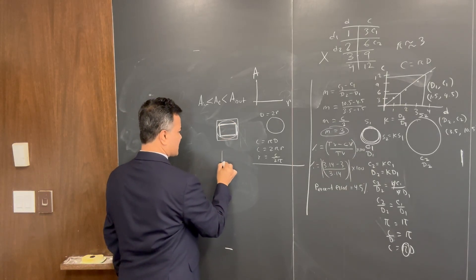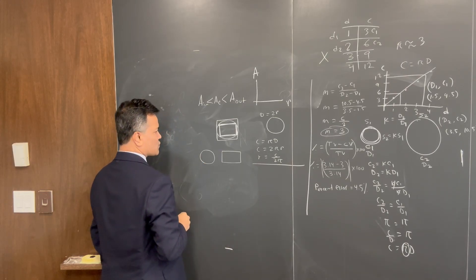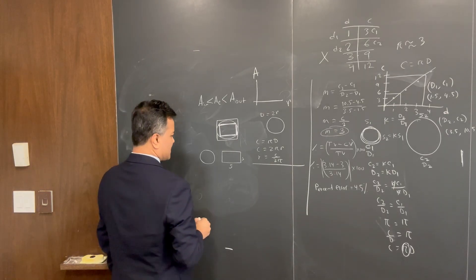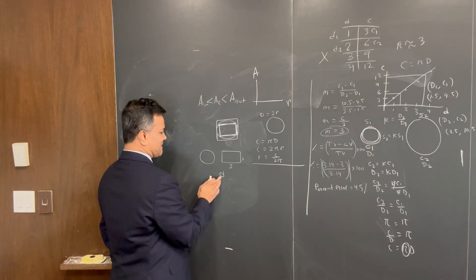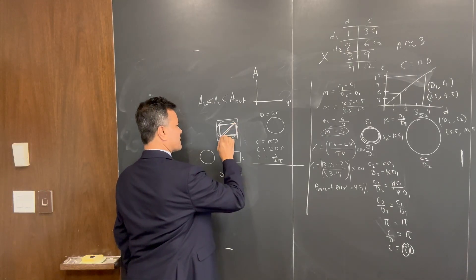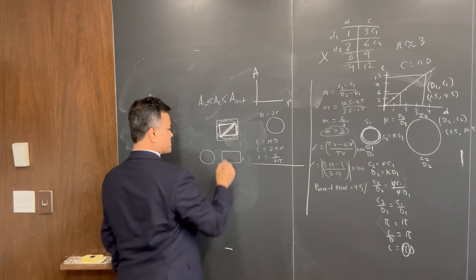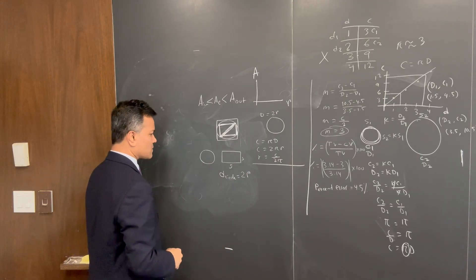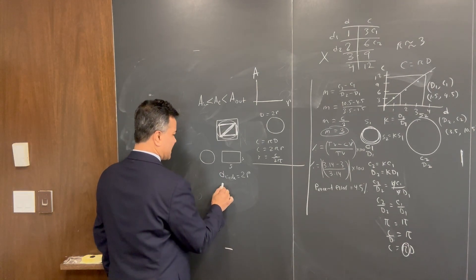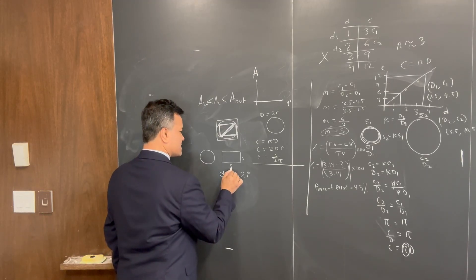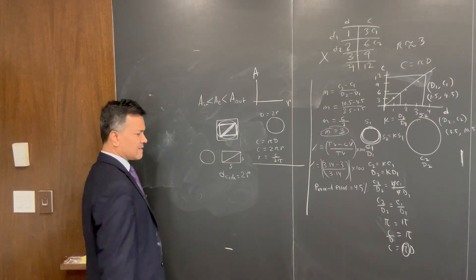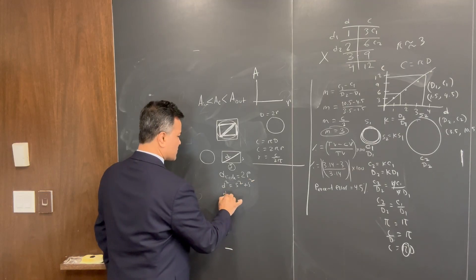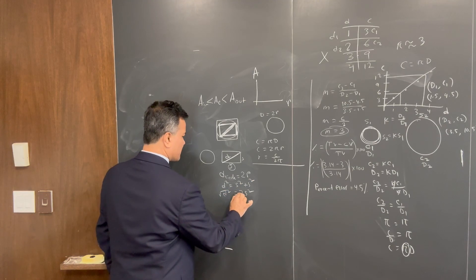To find the area inside, consider the inscribed square. The diameter of the circle is 2r, which is the diagonal of the square. If the side of the square is s, then by the Pythagorean theorem d squared equals s squared plus s squared, so d squared equals 2s squared. Taking the square root, d equals s times the square root of 2.